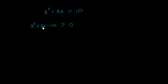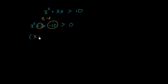This gets us into a form that we're more used to seeing quadratic expressions in. We're going to factor it — we need two numbers whose product is negative 10 and whose sum is positive 3. Positive 5 and negative 2 work: their product is negative 10 and their sum is positive 3. So we can rewrite this as x plus 5 times x minus 2 is greater than 0.